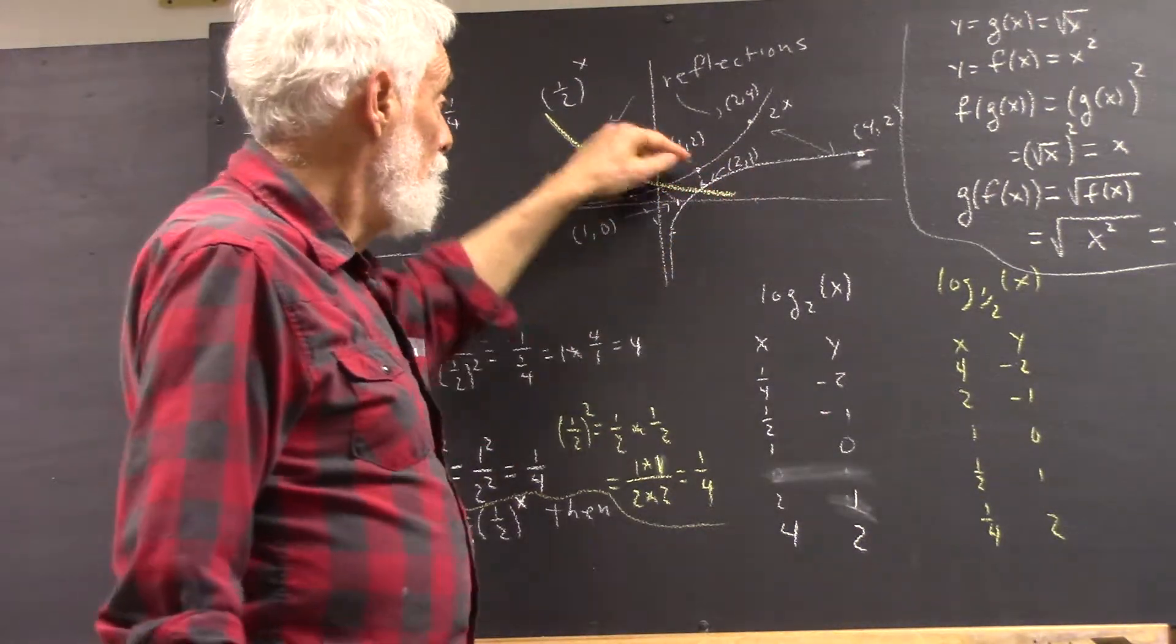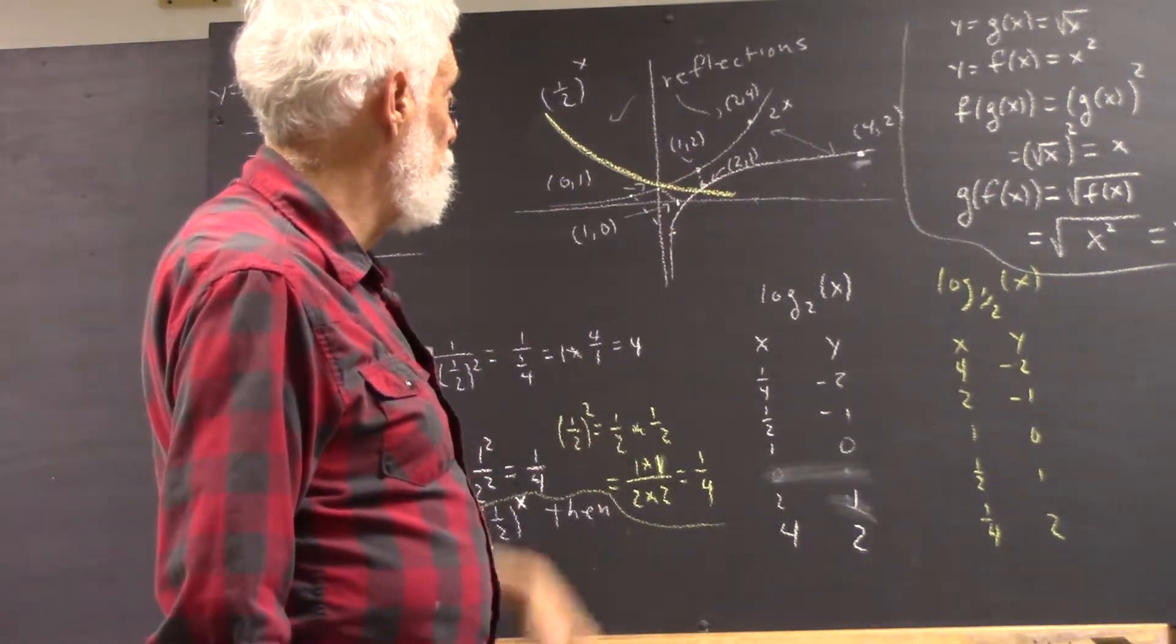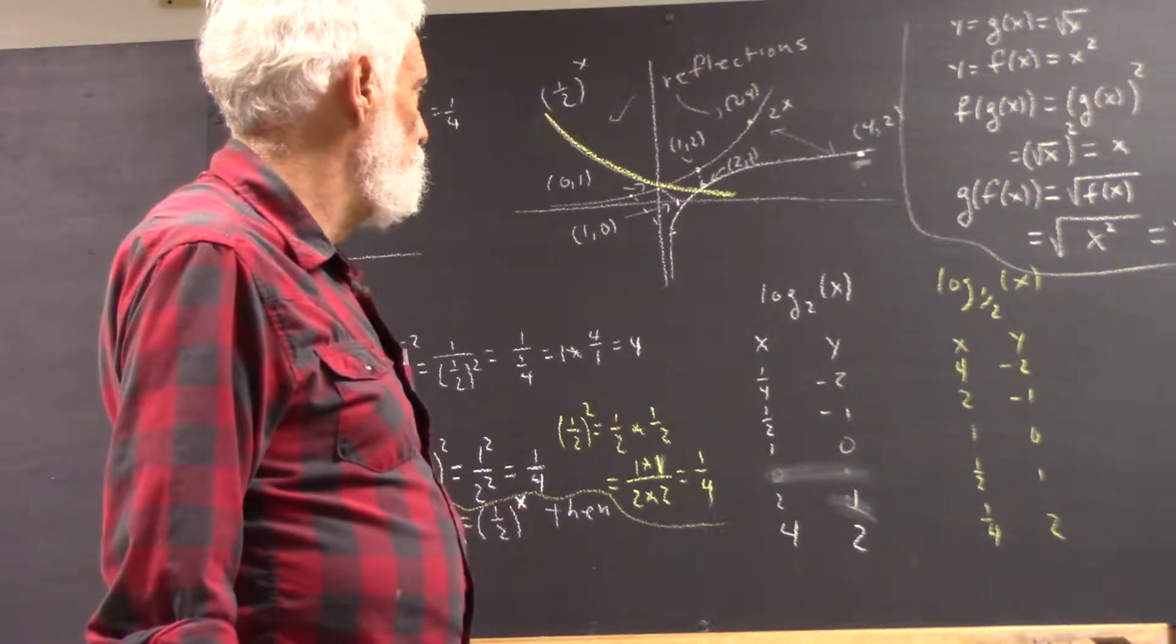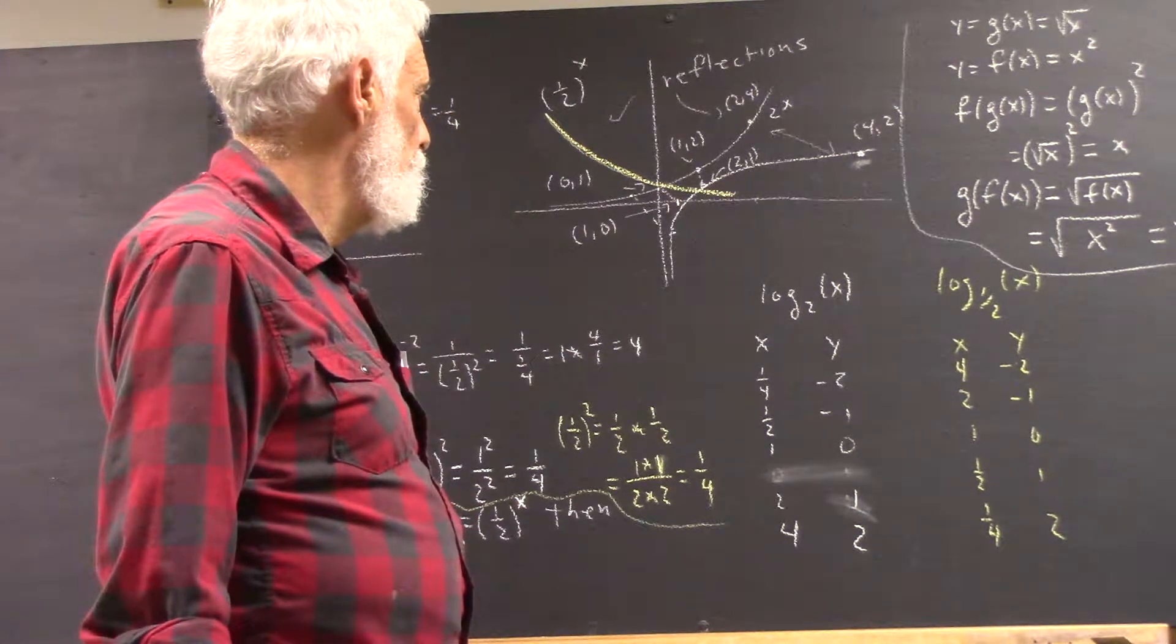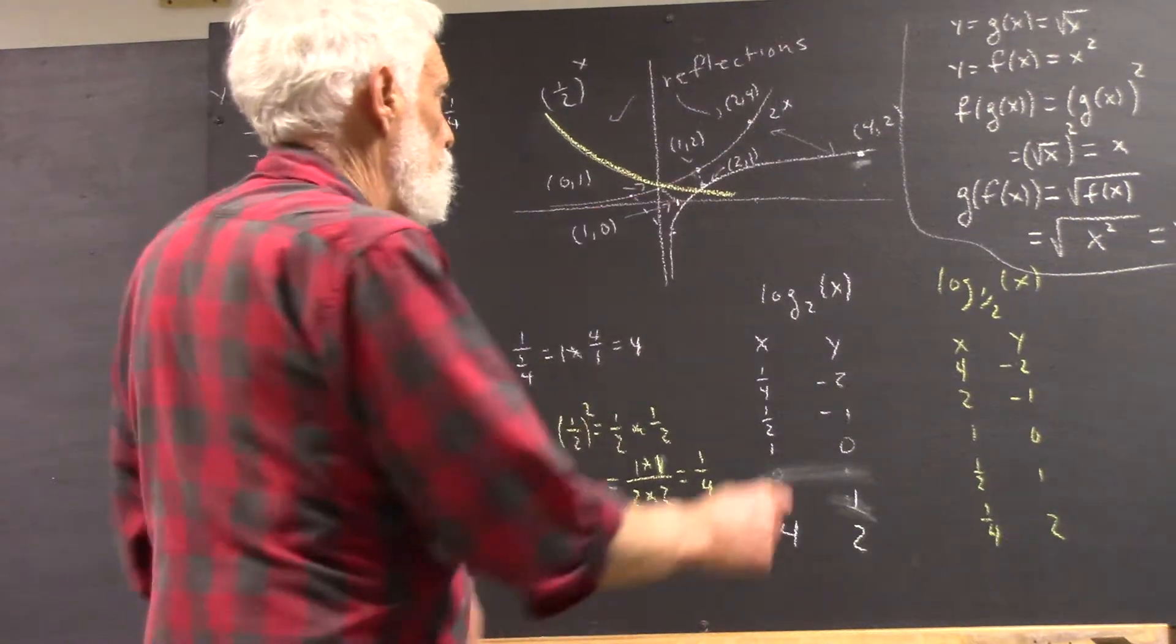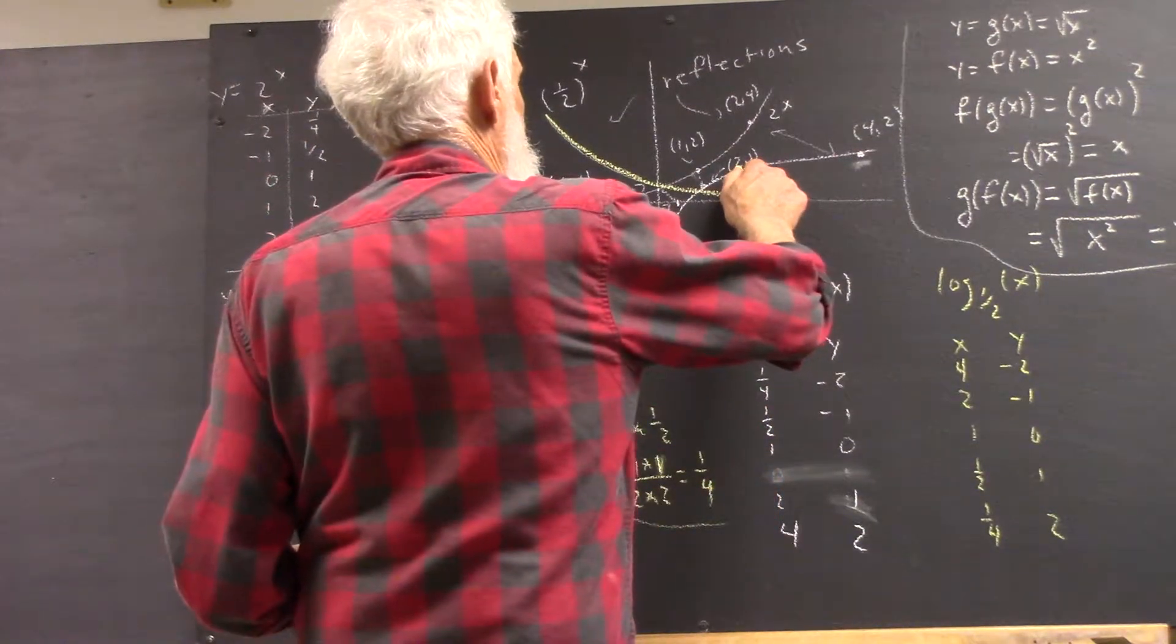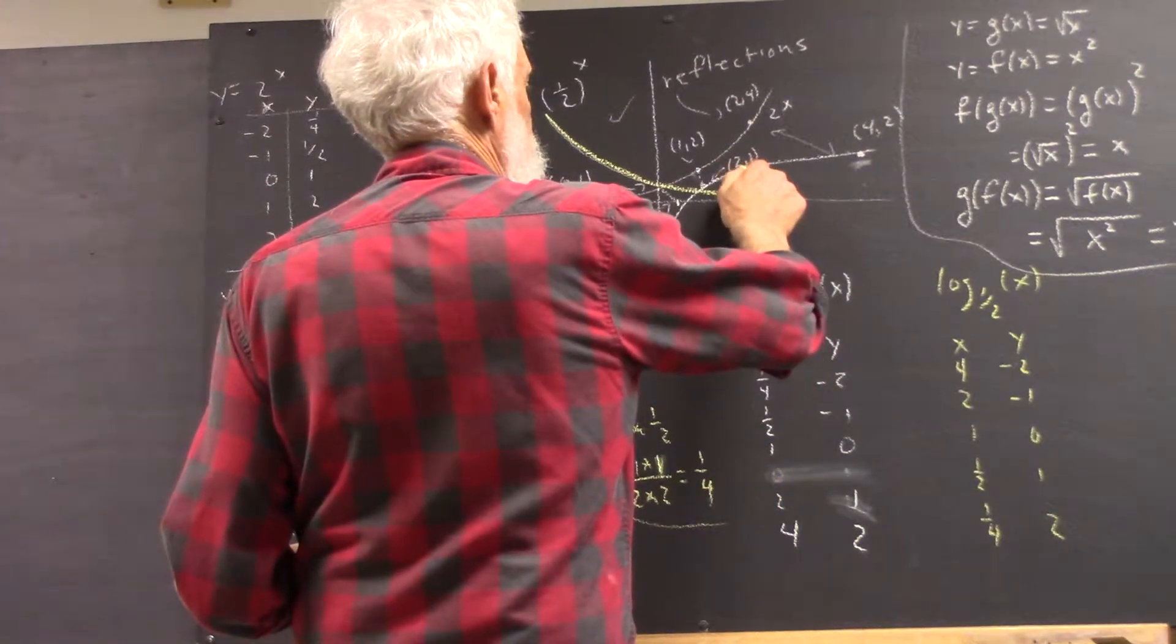1, 2 becomes 2, 1. 1, 2 is here. 2, 1 is here. And I don't know how 2, 1 ended up here. 2, 1 is like out here. 2 is up here.